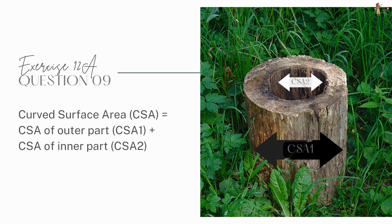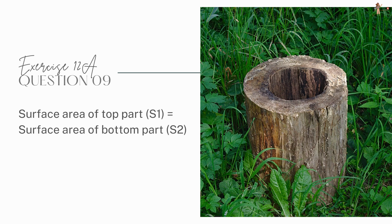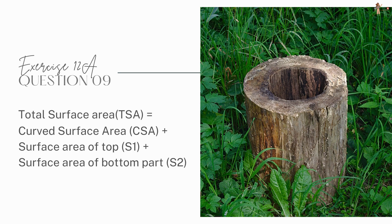Surface area of the top part is equal to the surface area of the bottom part. Now, total surface area would be the total curved surface area plus surface area of the top part plus surface area of the bottom part.